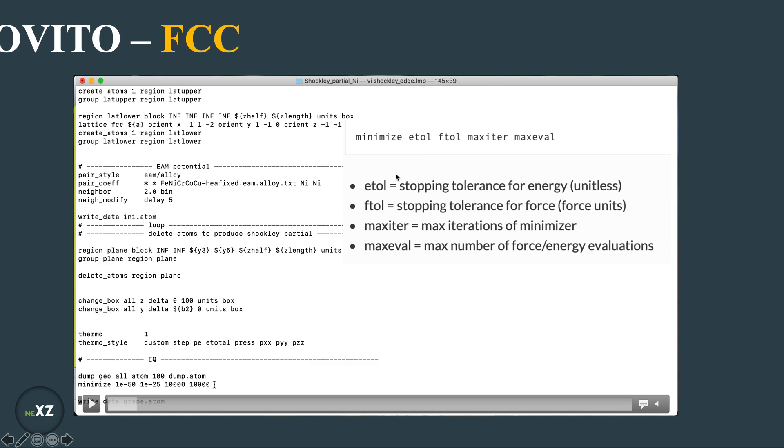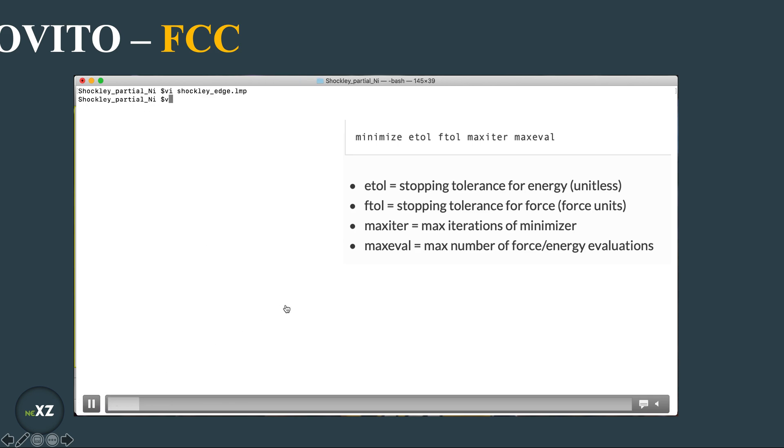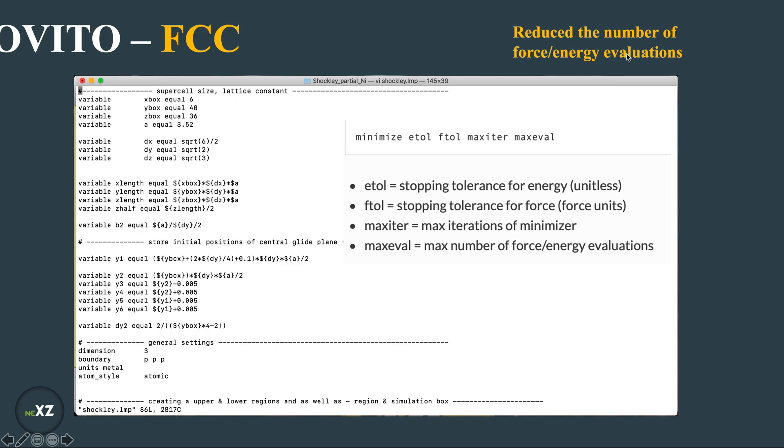For my minimization command I am using these tolerance values and this maximum iterations of minimizer and this is the maximum number of the force/energy evaluations. So and I am outputting the data for every 100 thermodynamic steps. What I do right now is I reduce the number of force/energy evaluations.